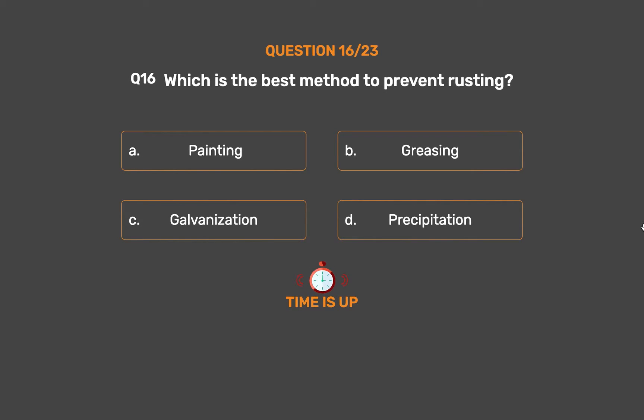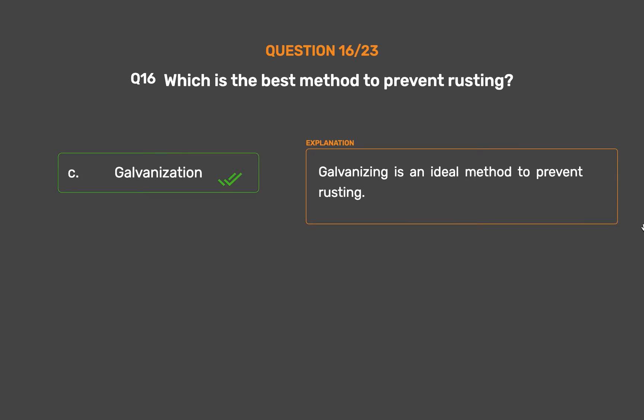The correct answer is Option C: Galvanization. Galvanizing is an ideal method to prevent rusting.